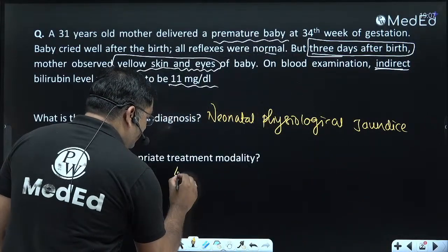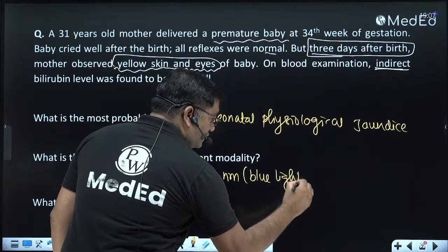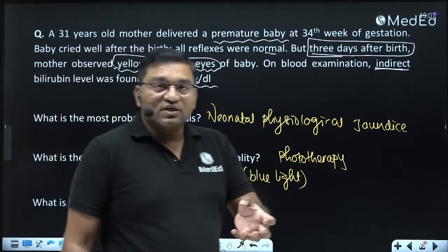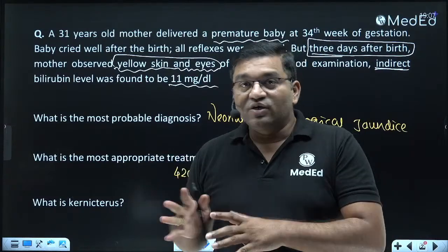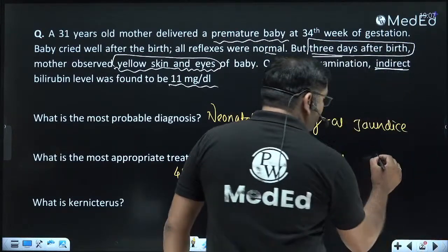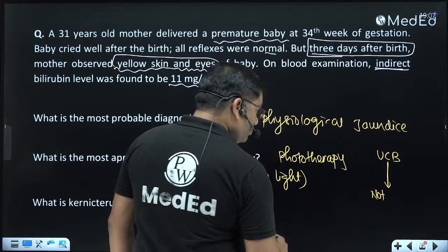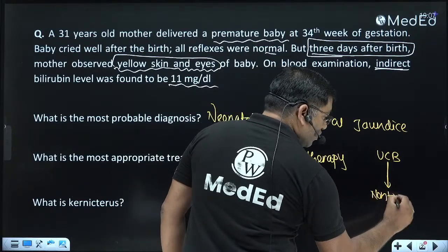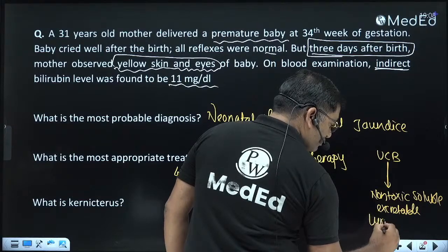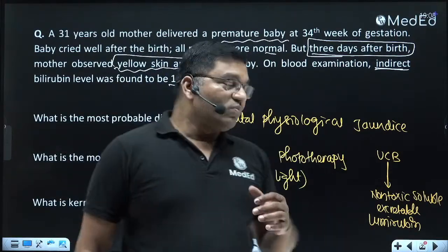Blue light of 420 to 470 nanometers is given in the treatment — that is known as phototherapy. You may have seen in the neonatal unit or pediatric ICU a blue color rack-like instrument where the baby is kept — that is the phototherapy unit. The basis of phototherapy is that blue light of 420-470 nanometers converts unconjugated bilirubin into a non-toxic, water-soluble excretable form called lumirubin, which is excreted in the urine.